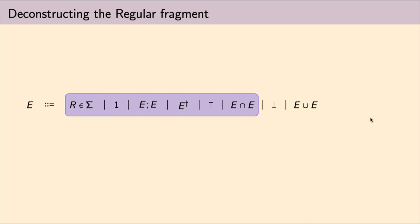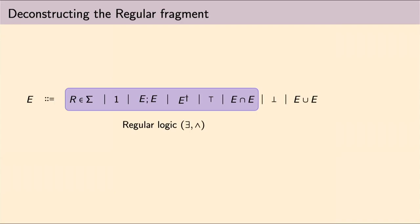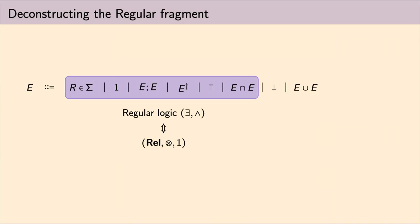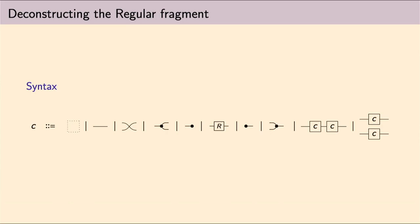Let's start with the regular fragment, which is the one which basically leaves out the union and the bottom relation. This corresponds to regular logic, whose semantics is taken in the category of sets and relations, but seen as a monoidal category, where the tensor product is the Cartesian product of relations. This being a monoidal category means that we can actually draw it as a language of string diagrams.